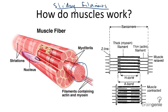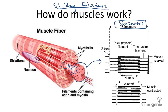Looking at this myofibril, we could break it down into a basic unit called a sarcomere, which we could see a little bit differently on the right. These repeating units of sarcomeres are found running horizontally across the length of this myofibril. Let's look at this sarcomere.